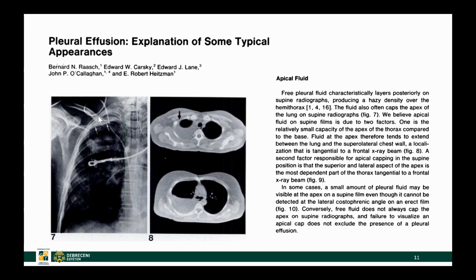The fluid is only visible in the apical region, and again it has to do with the fact that relatively there is much more fluid in the apical region versus the basal areas. Down in the basal areas, there is a lot of lung causing transparency or darkness on the image, versus the apical area where you have just a tiny amount of aerated lung tissue and a lot of fluid. So the easiest place to pick up a tiny amount of pleural effusion on the supine image is either the apical area or along the lateral chest wall.